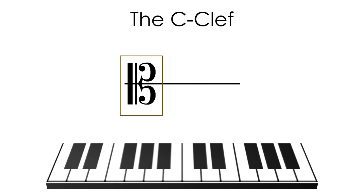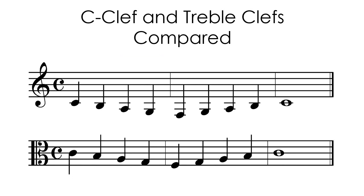The C clef indicates the location of middle C. Some instruments use the C clef at the extreme ends of their range to avoid extensive use of ledger lines. The C clef is used to indicate the range of pitches that fall between the treble and the bass clef.